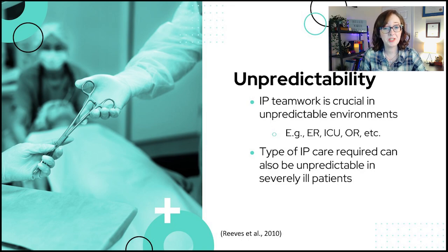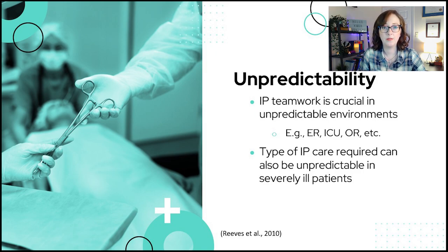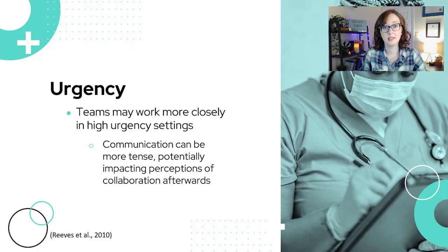Unpredictability — interprofessional teamwork is crucial yet very challenging in unpredictable environments like emergency rooms, ICUs, and operating rooms. The kind of interprofessional care a patient requires can also be unpredictable in severely ill patients. For example, a patient may initially only need input from medicine, nursing, and pharmacy, but later require extensive care from occupational therapy, physiotherapy, social work, medical radiation technology, and others. The level of urgency can also necessitate but challenge interprofessional teamwork — teams may work more closely in high-urgency situations like running a code blue, but team members can also be more terse or abrupt in their communication, potentially impacting perceptions of collaboration afterward.